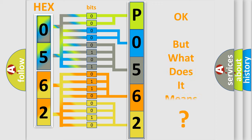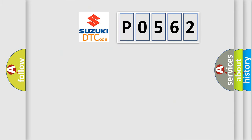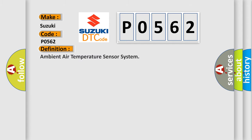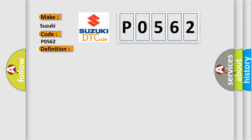The number itself does not make sense to us if we cannot assign information about what it actually expresses. So, what does the diagnostic trouble code P0562 interpret specifically for Suzuki car manufacturers? The basic definition is: ambient air temperature sensor system. Here is a short description of this DTC code.